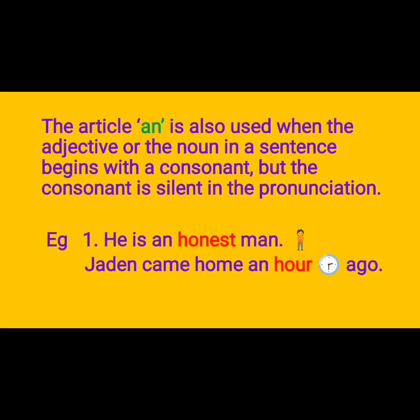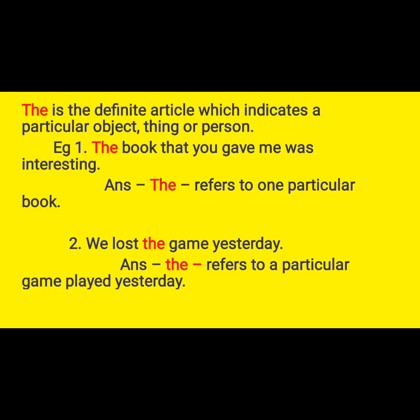The article an is also used when a noun or adjective in a sentence begins with a consonant that is silent in pronunciation. For example: he is an honest man — the H is silent, so we pronounce it as 'honest'. Similarly, 'Jayden came home an hour late' — the H is silent. These are some exceptional rules you need to know. The definite article the indicates a particular person or thing: the book that you gave me was interesting — it refers to a particular book. We lost the game yesterday — we are talking about a particular game.